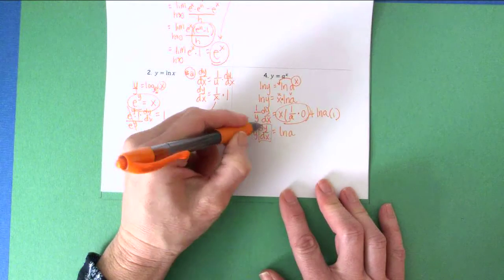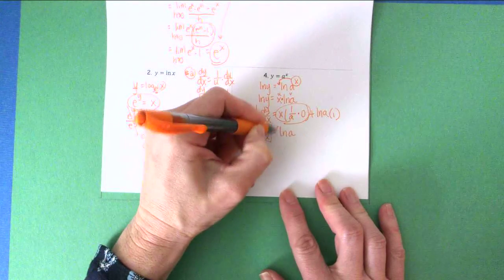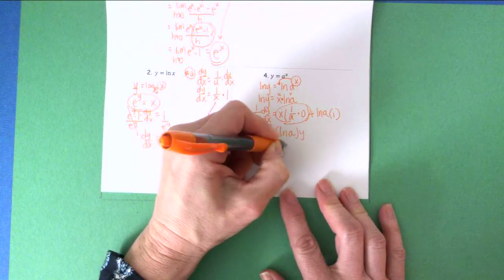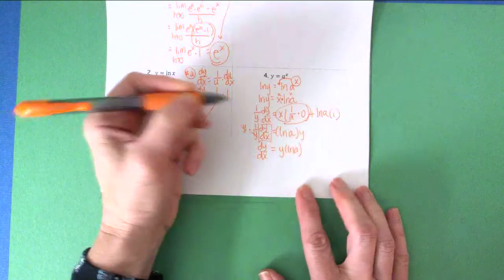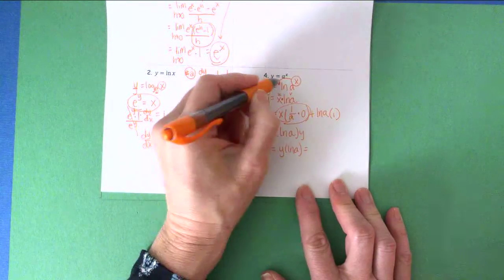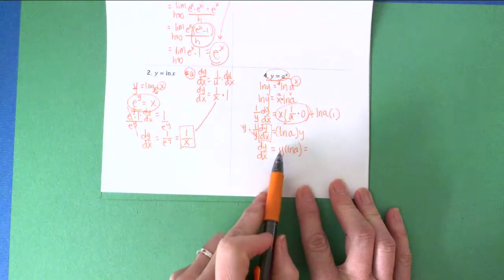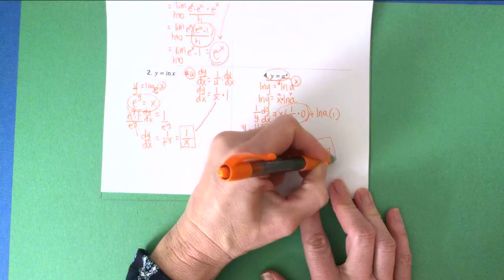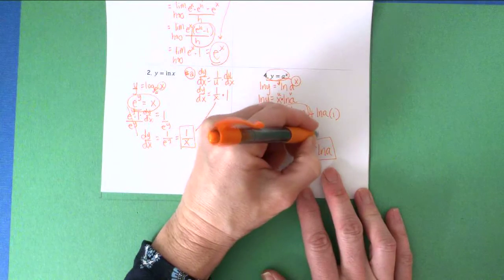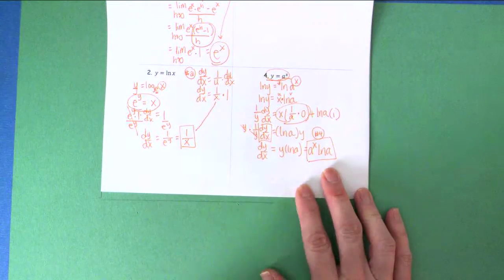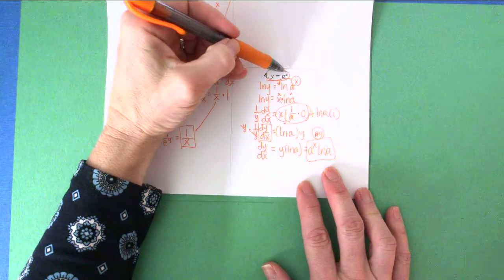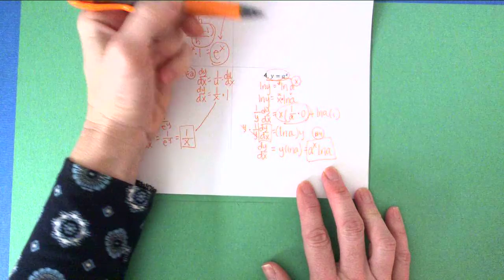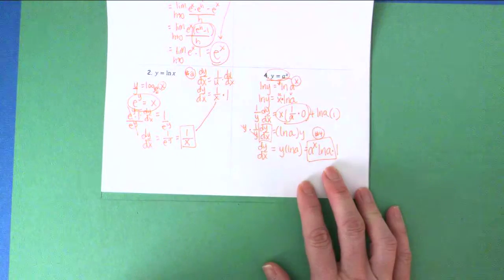Solving for dy/dx, I multiply both sides by y: dy/dx equals y times the natural log of a. Since y equals a^x, I replace y with a^x, giving dy/dx equals a^x times natural log of a. That is formula number four from the front page, telling me that the derivative of a^u is a^u times natural log of a times the derivative of u, which in this case is one.